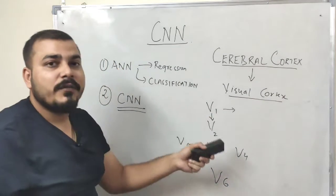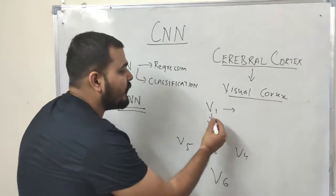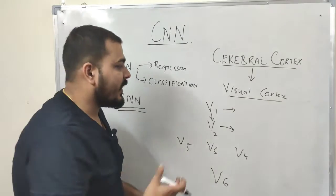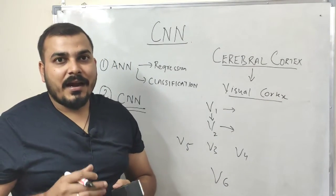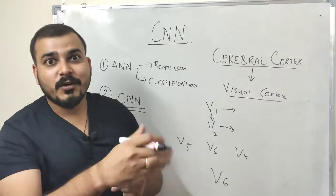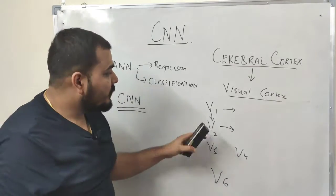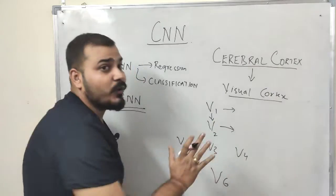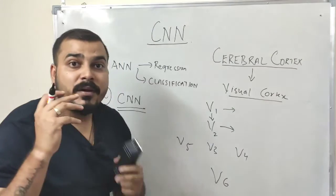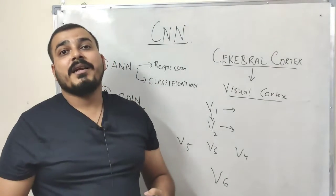After V1, the information passes to the V2 layer, where more information is gathered. For instance, V2 might try to determine whether an object is moving, and whether there are multiple objects — like a cat and a dog together. Again these are just examples, but the key point is that each and every layer performs some kind of operation where you are extracting information from those images or video frames.